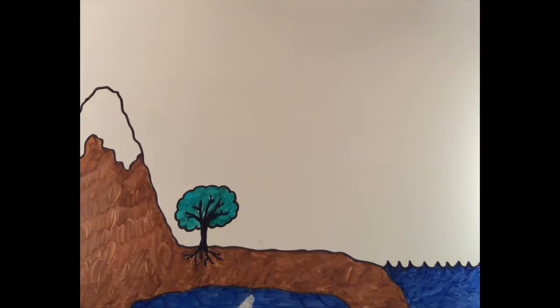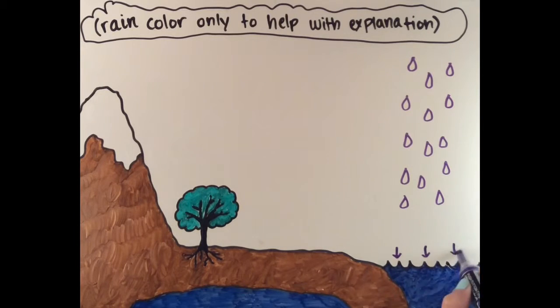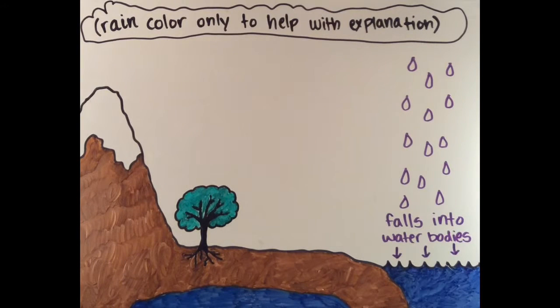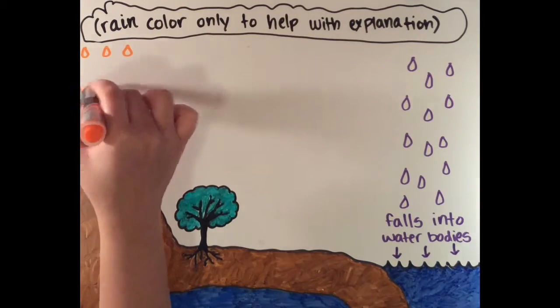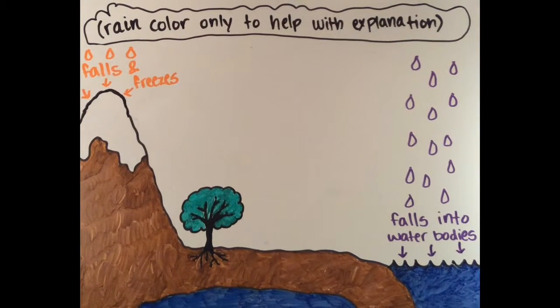When there's a storm, lots of things can happen to the water. Sometimes it lands directly into water bodies, like lakes, rivers, and seas. Sometimes this water falls into really cold areas, like on top of ice caps on mountains or on glaciers, and freezes.